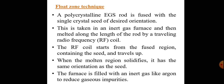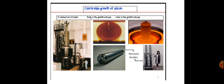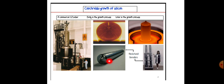We have discussed another method, the CZ process or Czochralski growth process, to convert polycrystalline silicon into monocrystalline silicon. In that case, we obtained a pure silicon ingot. The raw material used for the CZ process is polycrystalline electronic grade silicon, or EGS. That is placed in a furnace with molten EGS, and it solidifies when a seed crystal is dipped in and pulled outside, giving us a monocrystalline ingot.